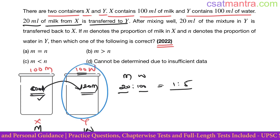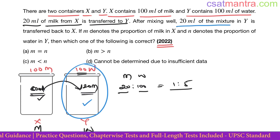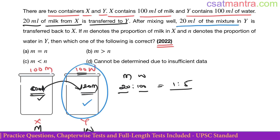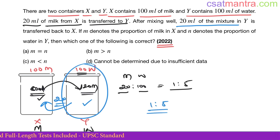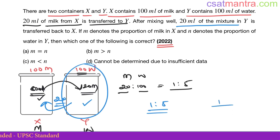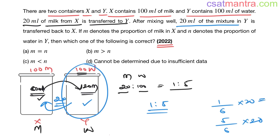The mixture in Y is mixed well, then 20 ml of the mixture is transferred back to X. Since the milk-to-water ratio in Y is 1:5, the total parts are 6. So the milk quantity in the 20 ml is 1/6 × 20 = 20/6, and the water quantity is 5/6 × 20 = 100/6.